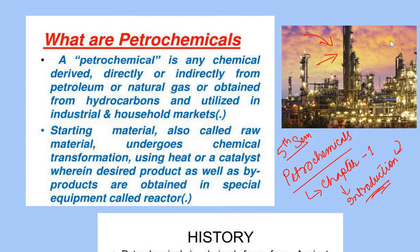I am going to talk about the introduction part. I am going to talk about what petrochemicals are. The definition of petrochemical is: any chemical derived directly or indirectly from petroleum or natural gas. They are obtained from hydrocarbons.